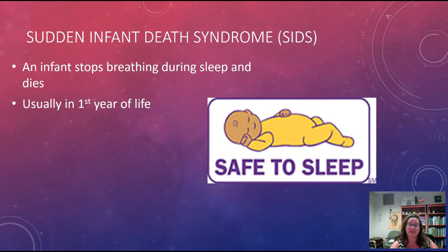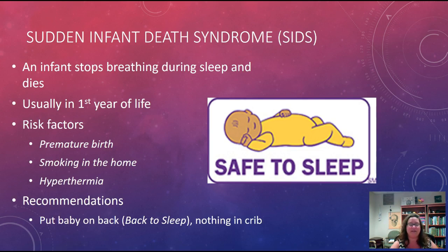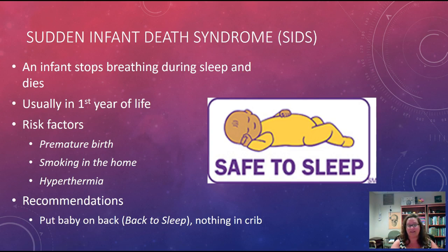Sudden infant death syndrome (SIDS) typically affects infants under one year of age — they stop breathing during sleep and pass away. Risk factors include prematurity, smokers in the home, and being overheated. Preventive measures include the 'Back to Sleep' campaign — placing babies on their back to sleep, on their tummy during awake playtime — and keeping the crib clear of bumpers, stuffed animals, and pillows, with just a flat mattress.